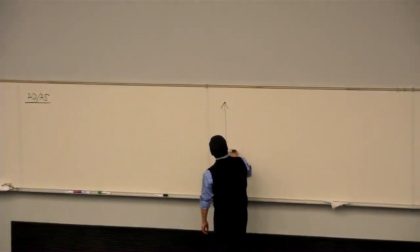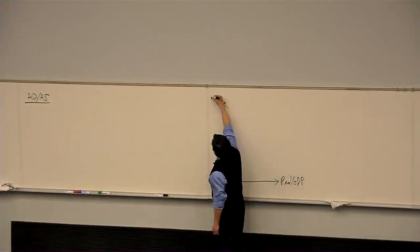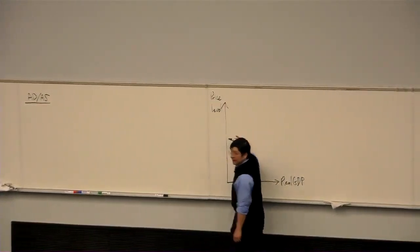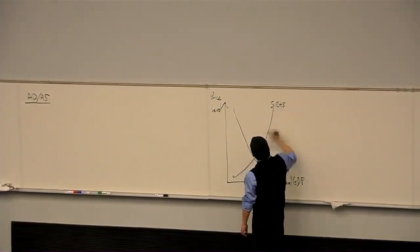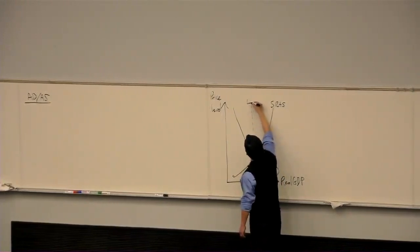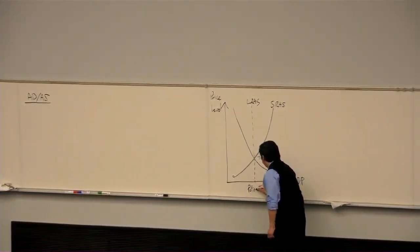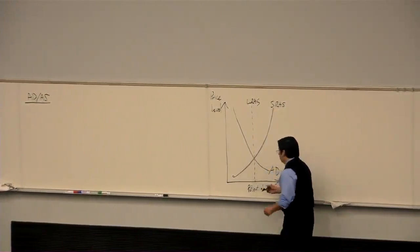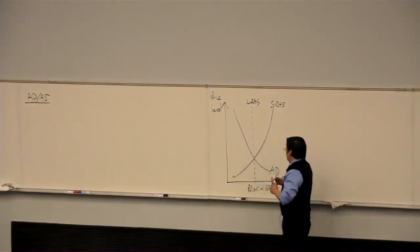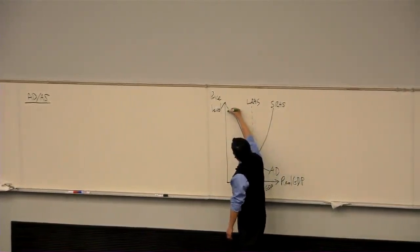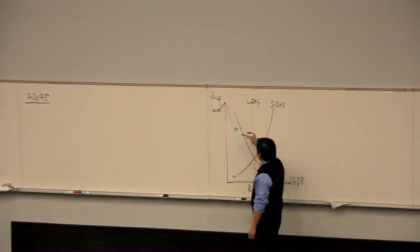A quick recap. The way that works is that we assume that real GDP and price level are jointly determined by the interaction of aggregate supply and aggregate demand. And so far, the kinds of things that might cause the business cycle are any of the many things that might cause the aggregate demand curve to shift away from its position. Last class, we looked at an example where the aggregate demand has shifted to the left, opening up a recessionary gap.